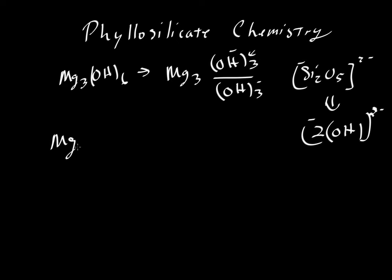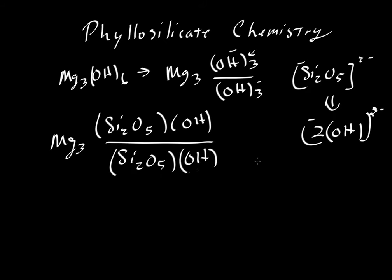So if we did that here, we would have Mg3 with Si2O5 on top, and then an OH leftover. And then an Si2O5 on the bottom, and then another OH here on the bottom. So here we've made the switch both top and bottom.